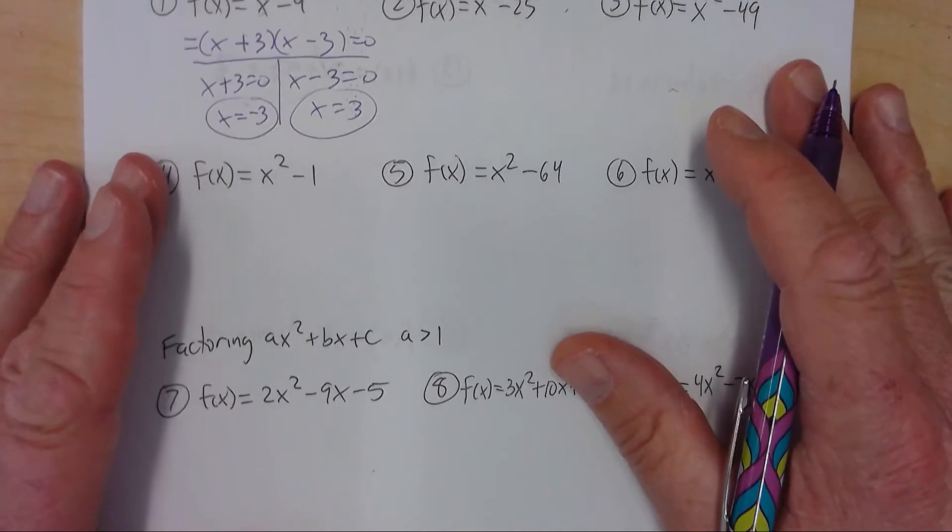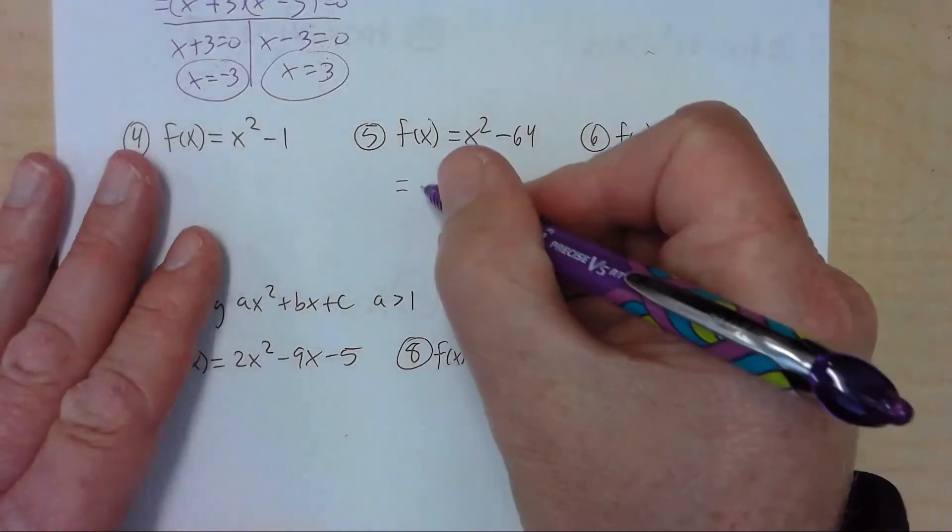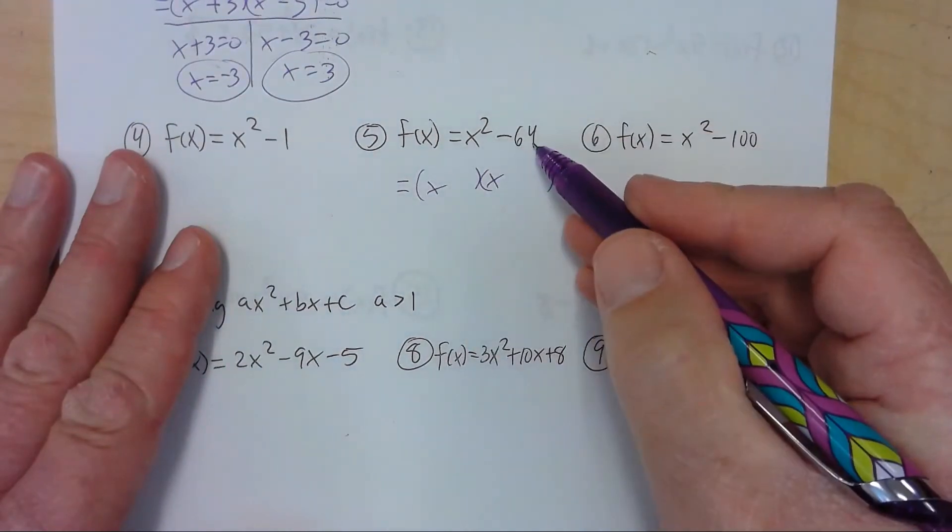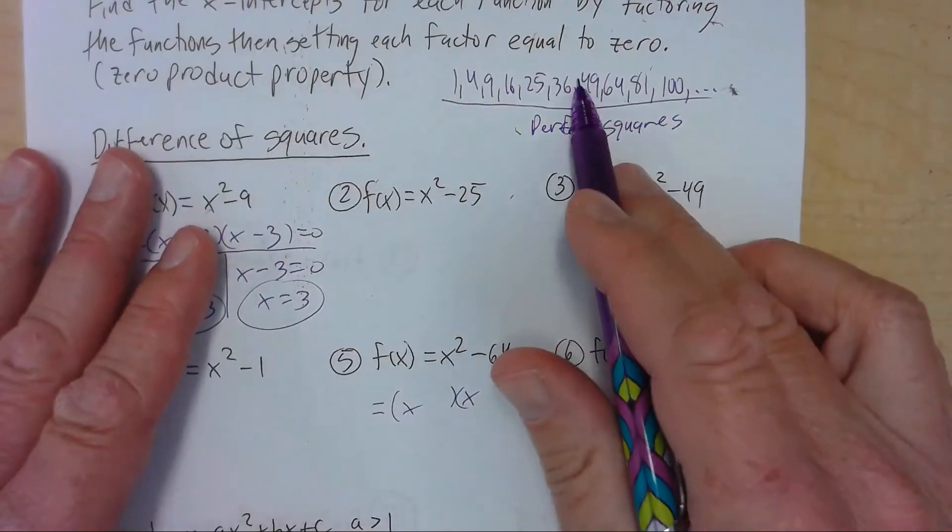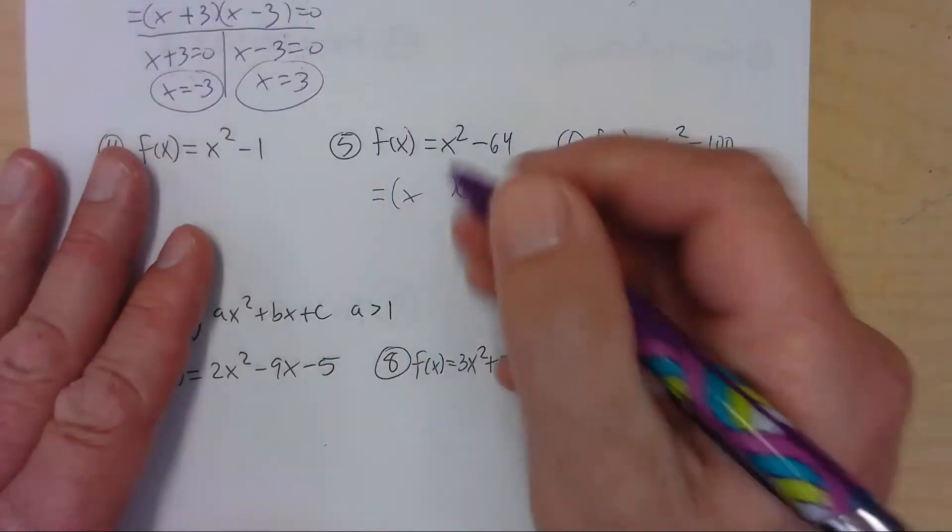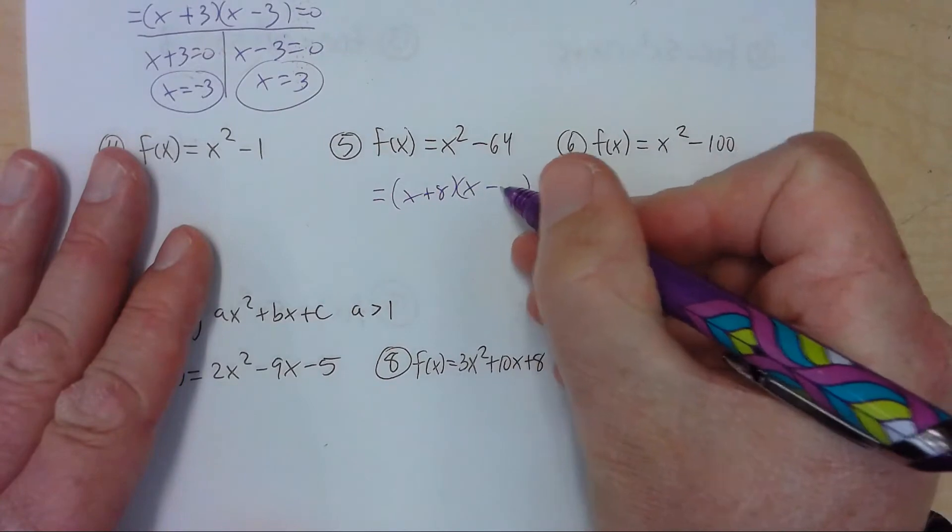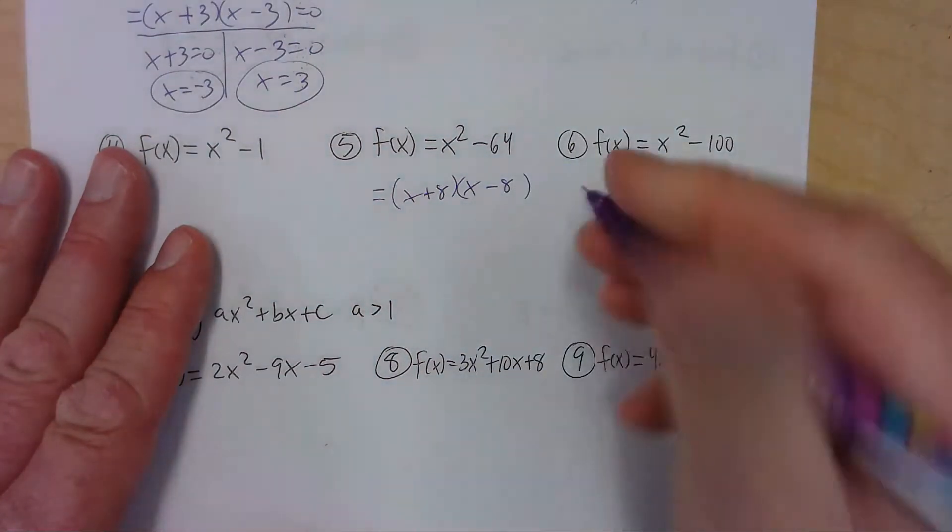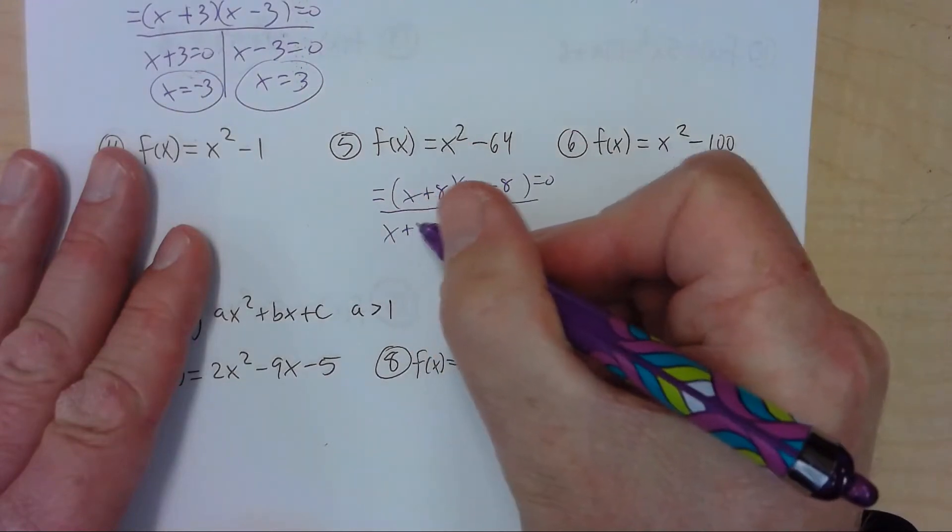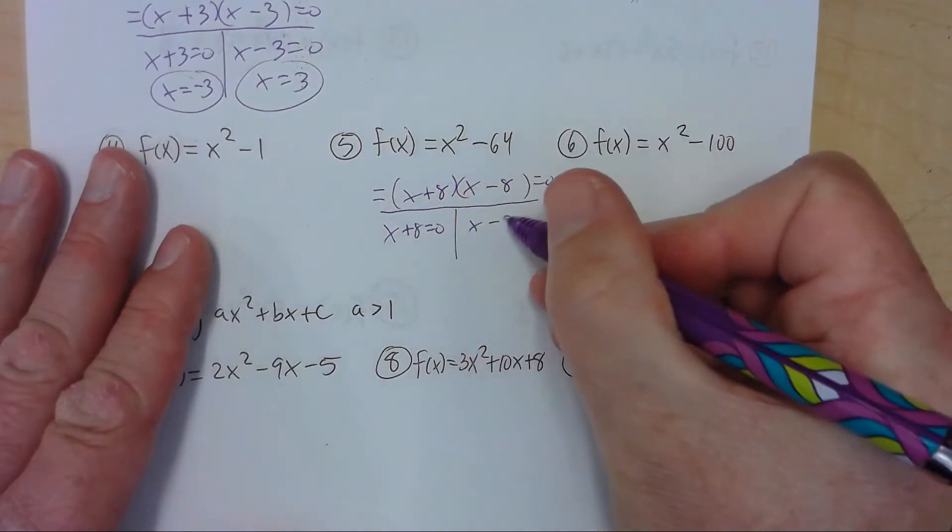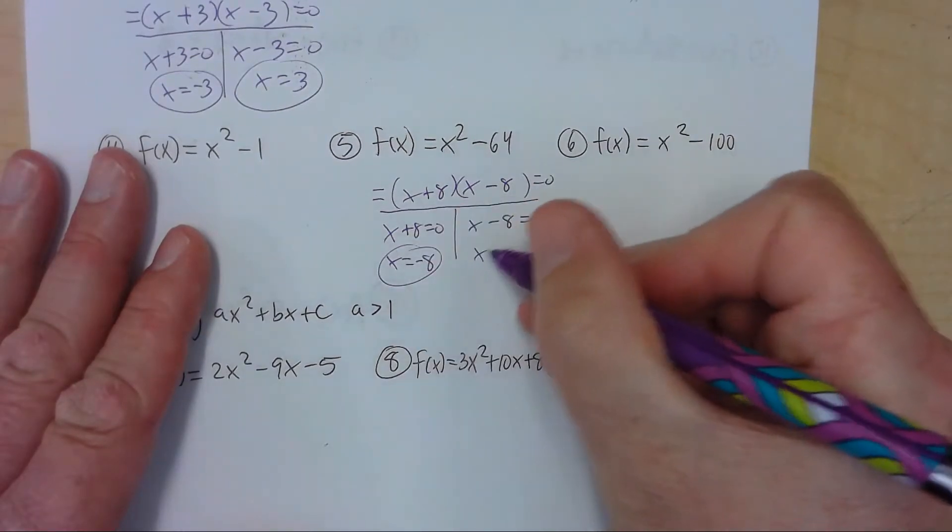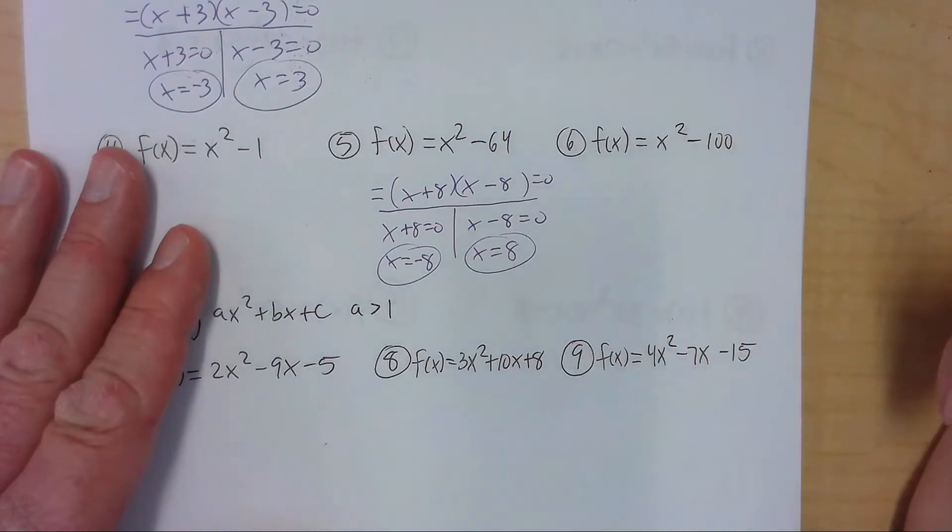Let's look at number 5. Number 5 would be two sets of parentheses, x and x. 64 is the 8th one, so 64 is 8 times 8. So one of them is plus 8. The other one is minus 8, and that's all we do. Once you set it equal to 0, then we do zero product property. We set each factor equal to 0. We subtract the 8 over. We add the 8 over. So we have negative 8 and 8.